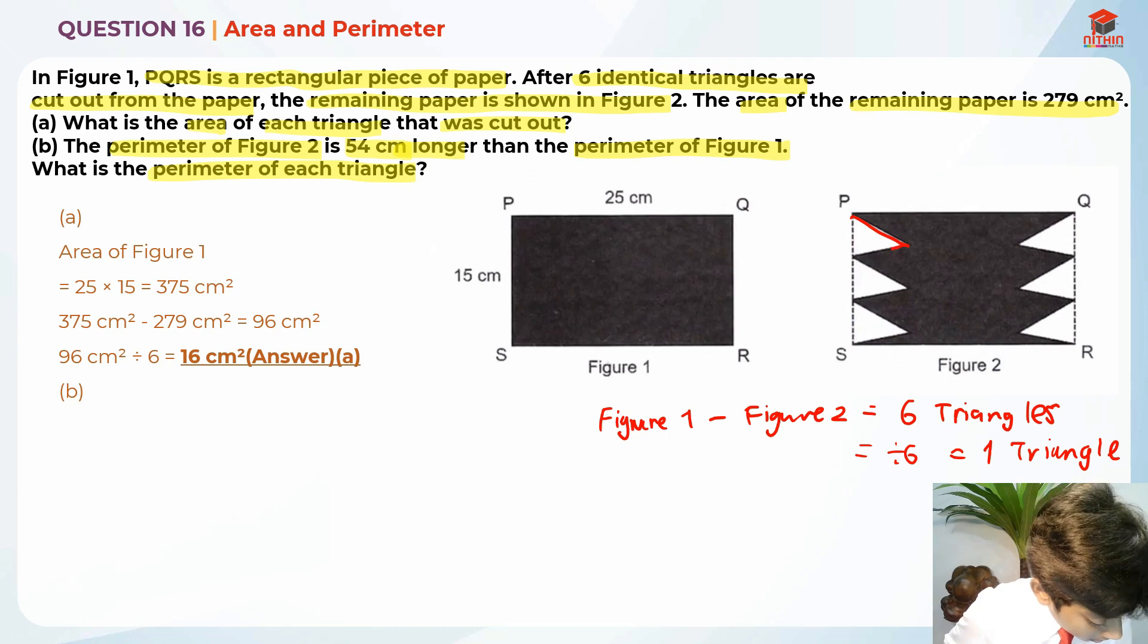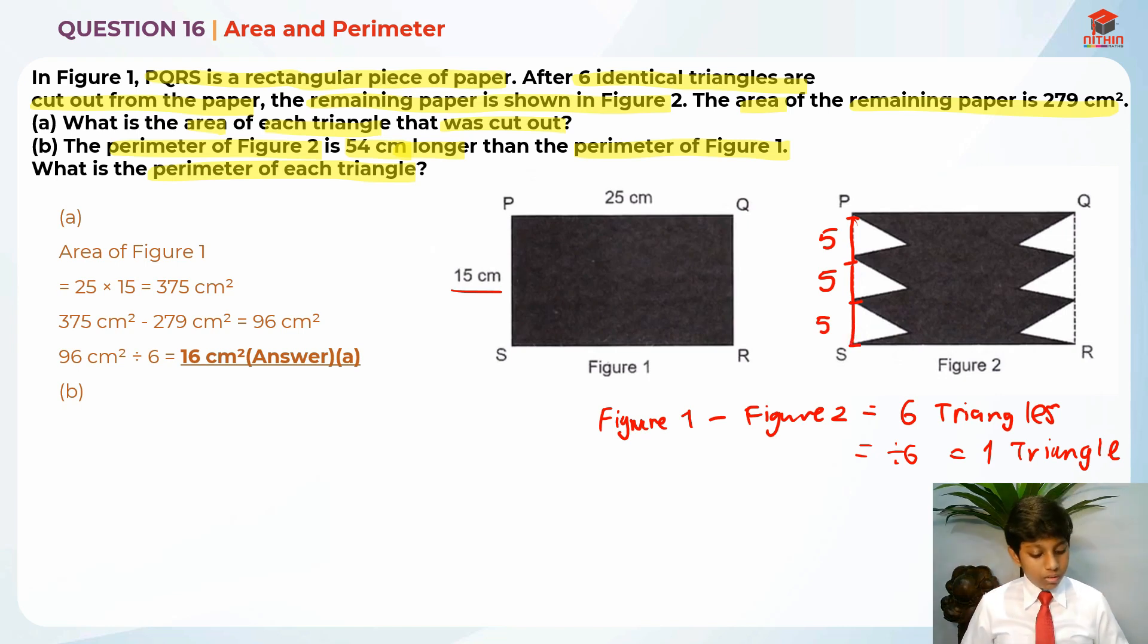Each triangle's perimeter is this. We can find one of the lines, which is this line, by taking 15 cm divided by 3, which gives us 5 cm. So it's actually 5 cm over here. 5 cm, 5 cm, and 5 cm again. Over here is also 5 cm, 5 cm, and 5 cm. This is what it says.